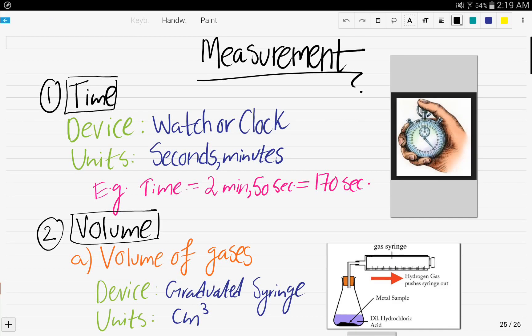The first part is measurement. So how do we measure time? The device is a watch or a clock and the units is seconds or minutes.